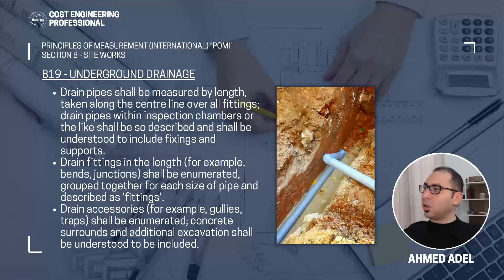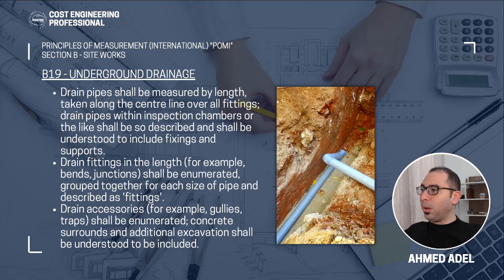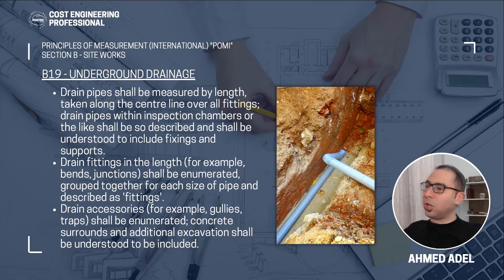Starting with subsection B19, underground drainage. Drain pipes shall be measured by length taken along the center line over all fittings. Drain pipes within inspection chambers or the like shall be so described and shall be understood to include fixing and supports. Drain fittings in the length — for example bends or junctions — shall be enumerated, grouped together for each size of pipe and described as fittings. Drain accessories, for example gully traps, shall be enumerated, and concrete surrounds and additional excavation shall be understood to be included.